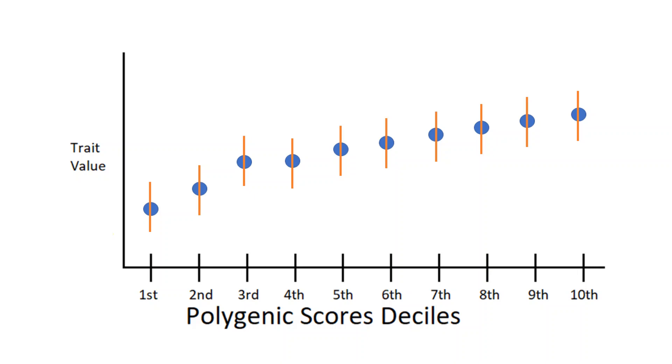One method of representing the explanatory power of a polygenic score graphically is by drawing confidence intervals above and below the mean level of a trait at each decile. Confidence intervals are values between which the mean value of the trait are likely to be found in some proportion of validation samples.